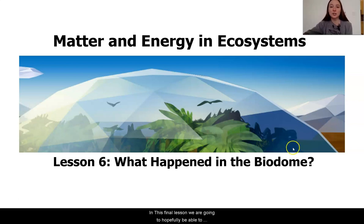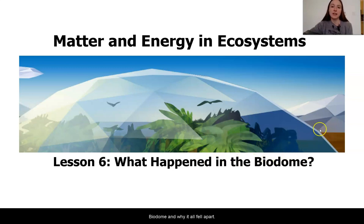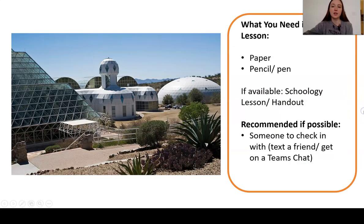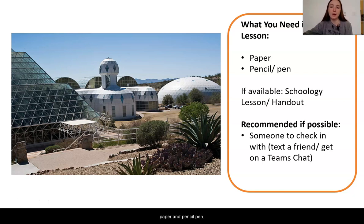In this final lesson, we are going to hopefully be able to draw conclusions about exactly what happened in the biodome and why it all fell apart. What you're going to need for this lesson today is a piece of paper and pencil or pen. If available, if you have a Schoology lesson or a handout from your teacher, you can go ahead and get those out as well.